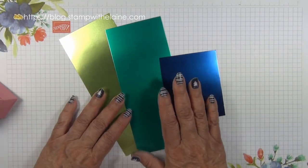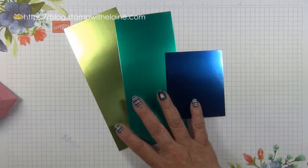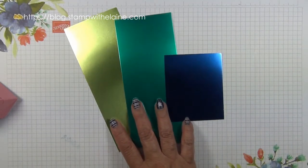Noble Peacock foil sheets to die cut the feathers. There are three colors in the pack and six sheets.